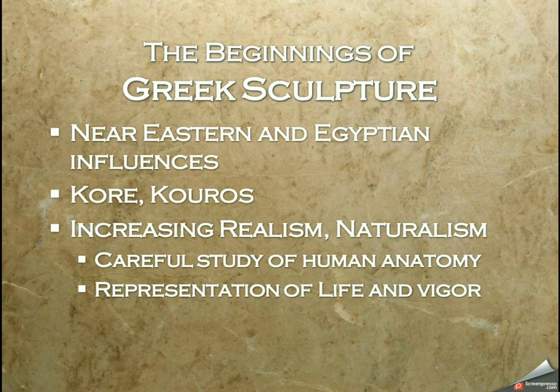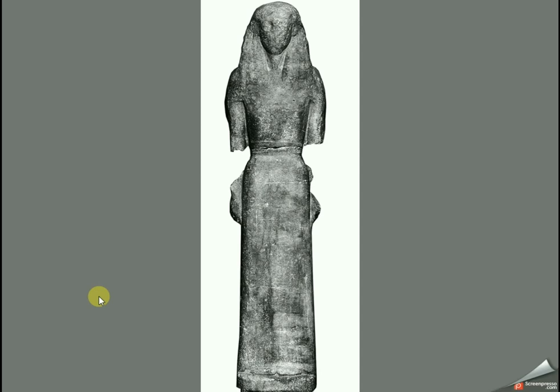Among the ancient Greeks there was an early emphasis on science and what we would call the scientific method today — carefully observing things. As they began their careful study of human anatomy, they were able to put that to work in the way they sculpt and display the human body, achieving a very real representation of life and vigor.